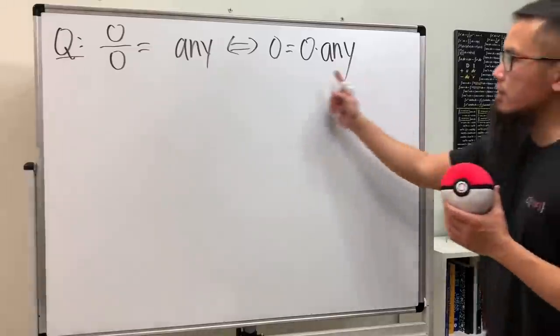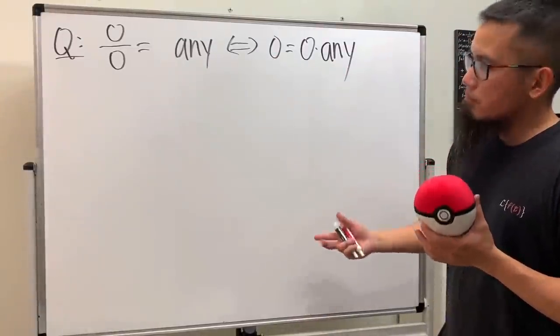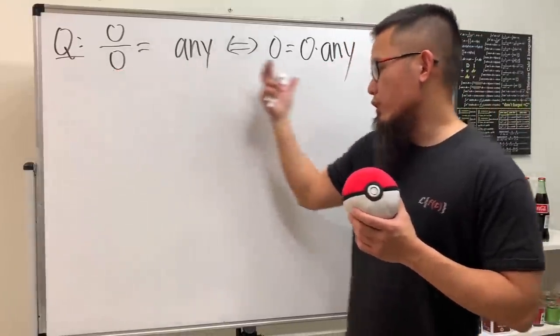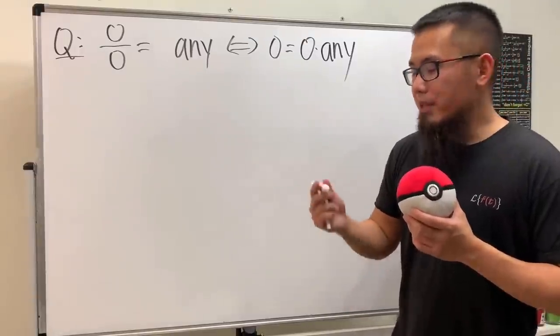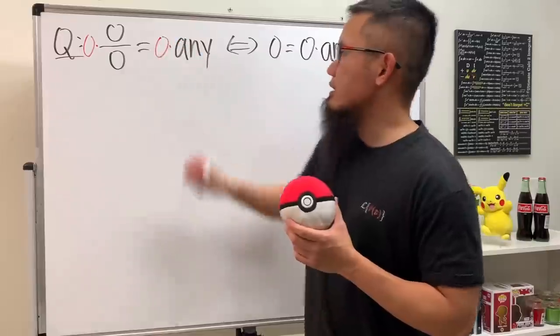For example, zero times five is equal to zero, zero times seventeen is equal to zero, zero times Pikachu is equal to zero I assume. Well, I agree with this part but I'm not sure if we can go from here to here.